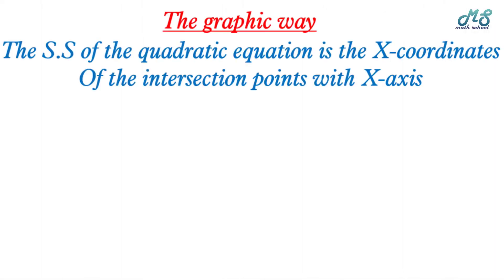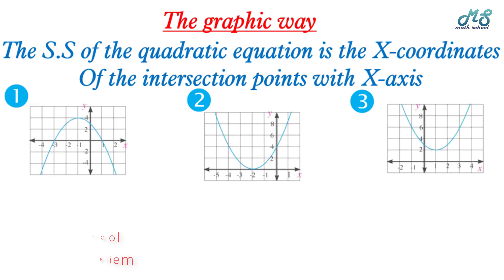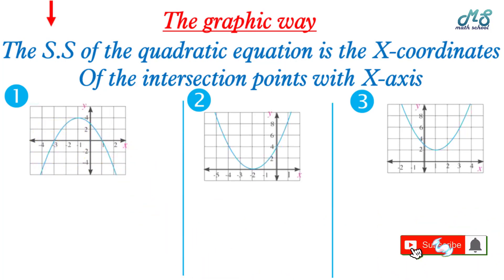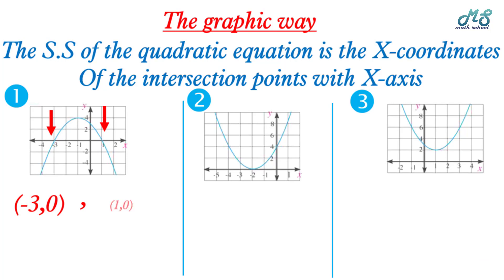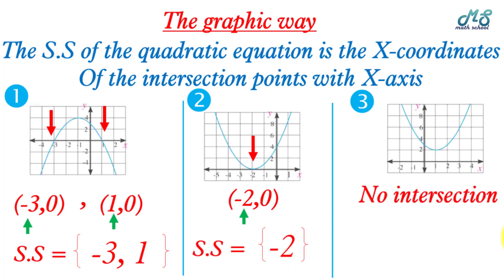The graphical method: after graphing the curve of the equation, the solution set is the x-coordinates of the intersection points with the x-axis. In figure one, the intersection points are at negative 3 and 1, so the solution set is {negative 3, 1}. In the second figure, there is one intersection point at x equals negative 2, so the solution set is {negative 2}. In the last figure, there is no intersection point, so the solution set is phi.